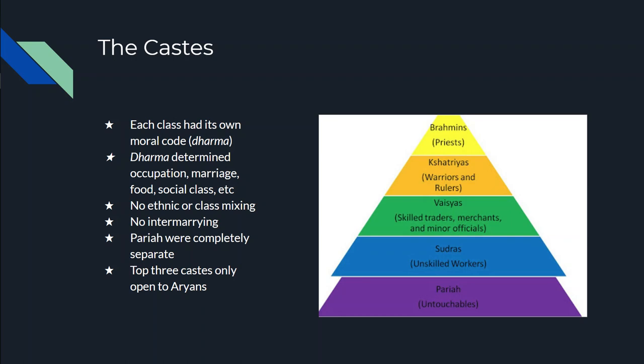Each of these castes has their own moral code, and that moral code is called a Dharma. So if you're a Brahmin, you're going to have a certain set of rules, laws, and customs. The same thing with Kshatriyas, Vyasas, and Sudras — you live within your caste, you live within your group. This Dharma, this moral code, controls everything. It controls what you can do in life, who you can marry, and it even controls what you can eat. There's no class mixing, just like there's no racial or ethnic mixing. A Brahmin cannot marry a Sudra; a Sudra cannot marry a Vyasa. It is strict with their castes.